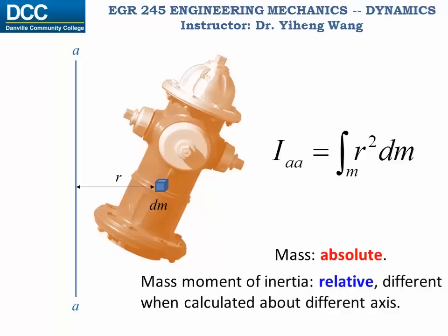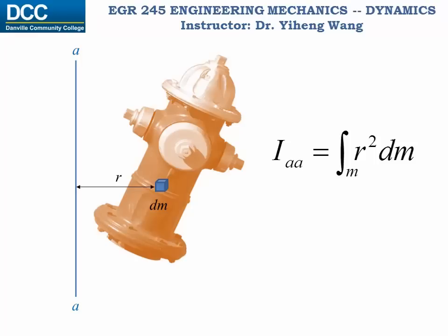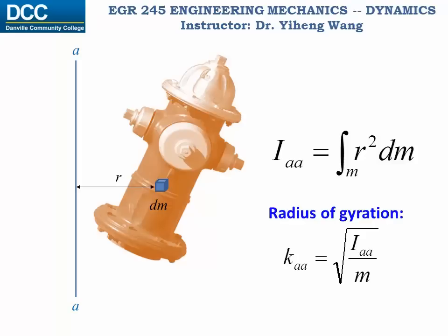Once the mass moment of inertia of a rigid body about a specified axis is determined, we can calculate its radius of gyration with respect to the same axis: k_aa equals the square root of the mass moment of inertia about axis aa divided by m, the mass of the rigid body. Radius of gyration has the unit of length. Normally this relation is used in reverse — given the radius of gyration, we can quickly calculate the mass moment of inertia about the same axis.